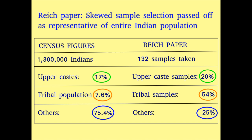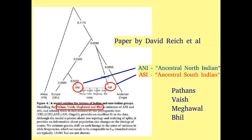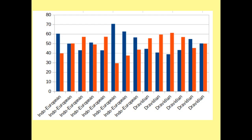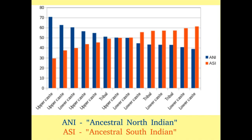Using these biased samples, the group tried to show massive differences in genetic structure between North Indian language speakers and South Indian language speakers. The same holds true for the genetic makeup of various castes, as can be seen in this graph.